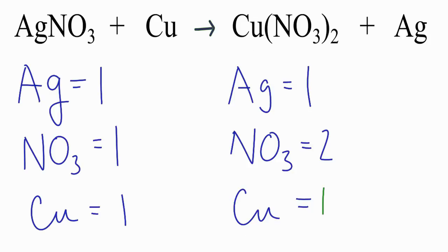So to balance the equation, we want to have the same number and type of atoms on each side. Silvers, those are already balanced. We have one NO3 on the reactant side, two on the product. What I can do is put a two in front of this AgNO3.